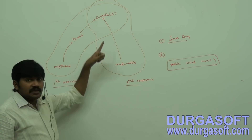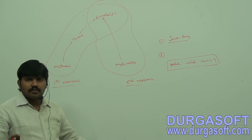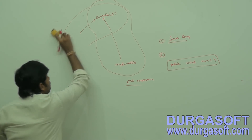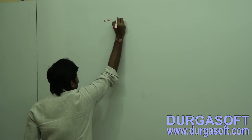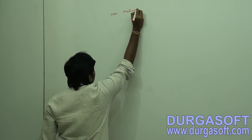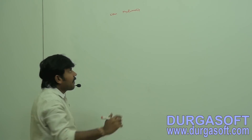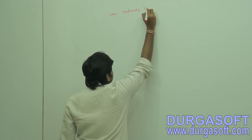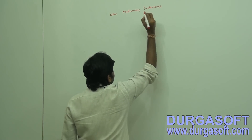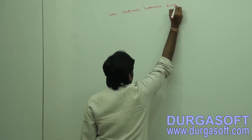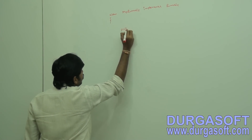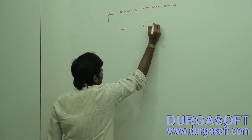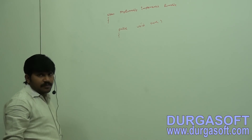Now I will explain how to define a thread using this approach. We write a class — MyRunnable — that implements the Runnable interface. We have to implement the run method because Runnable contains only one method: the run method.